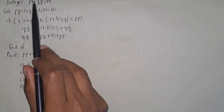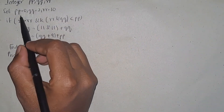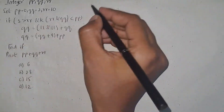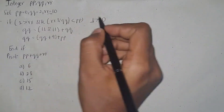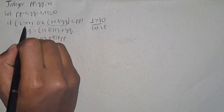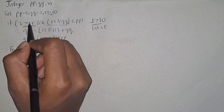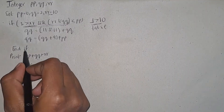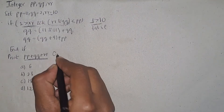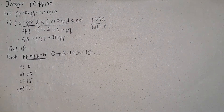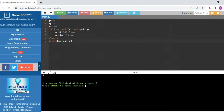In this question they have given integers p, q, and r and assigned some values to these variables. If condition one is greater than 10 — this is false. So this condition will satisfy only when two conditions are true, but here it is false, therefore the resultant value will be false. You will get out of the if condition, so you will print 0 plus 2 plus 10, which is 12. So the answer is 12.